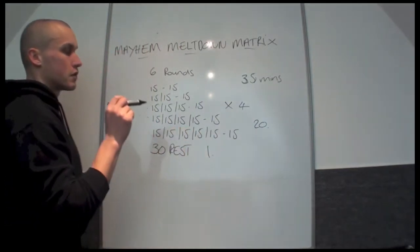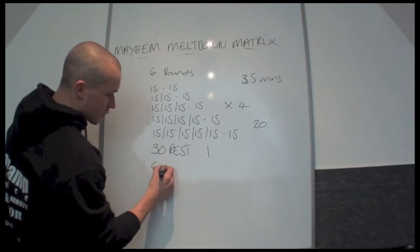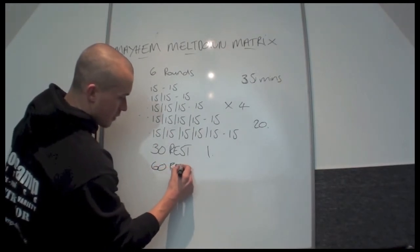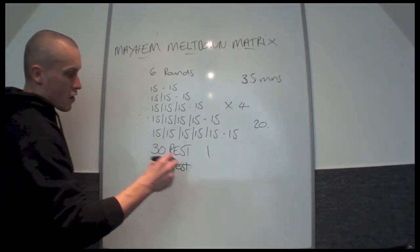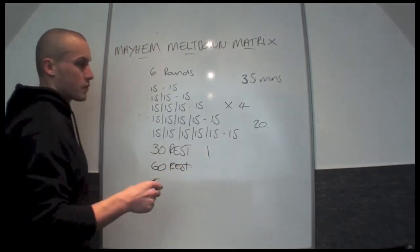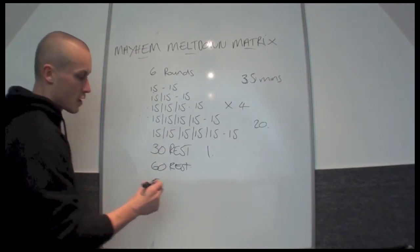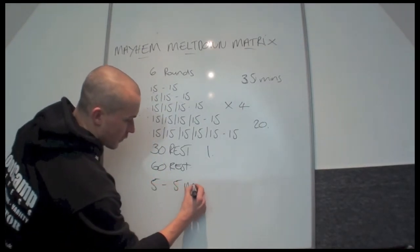Then you're going to use those 20 exercises on the final 2 rounds. After round number 4 you're going to get 60 seconds rest. Round number 5 would be all 20 exercises, back to back, 15 seconds worth, no rest. So round number 5 lasts 5 minutes in total.